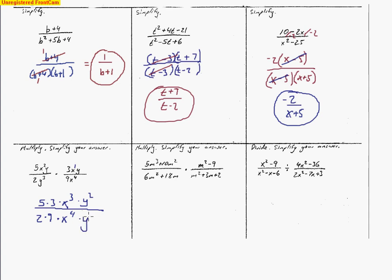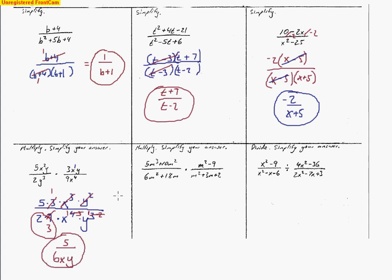Now we're ready to cancel. The 3 goes into the 9 three times. These three x's cancel three x's from the bottom, leaving one x on the bottom. The two y's disappear, leaving one y on the bottom. So what's left is a 5 on top, and down below 2 times 3 makes 6, then x and y — giving us 5 over 6xy.